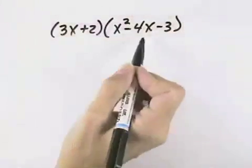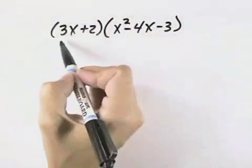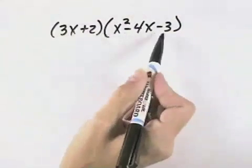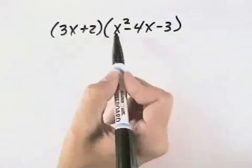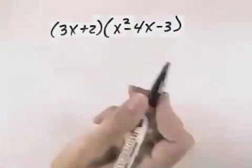Here we're multiplying a binomial times a trinomial. That means we need to take the 3x and multiply it by each of the three terms, and also the 2 and multiply it by each of the three terms in our trinomial.